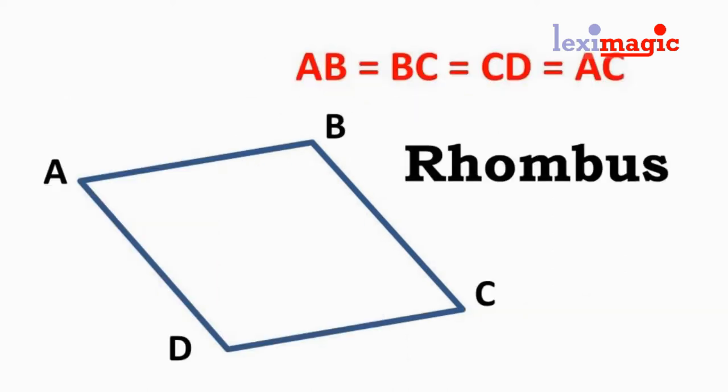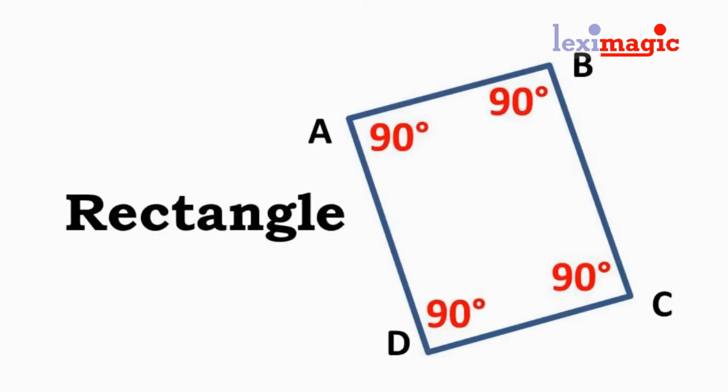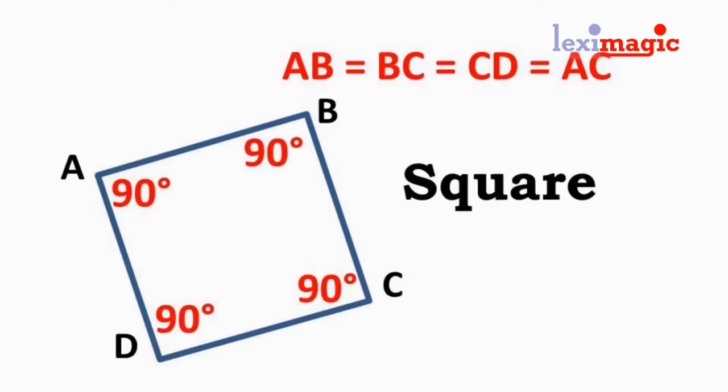A quadrilateral in which all four sides are equal in size is known as a rhombus. A quadrilateral in which all four angles are equal or four right angles is a rectangle. A square is a quadrilateral having equal sides and equal angles.